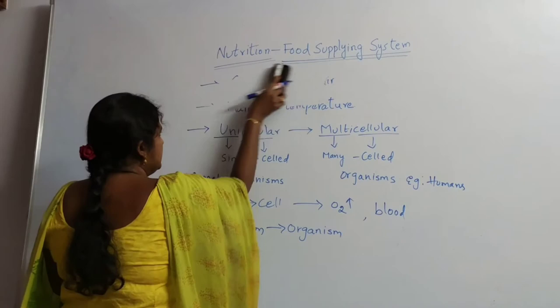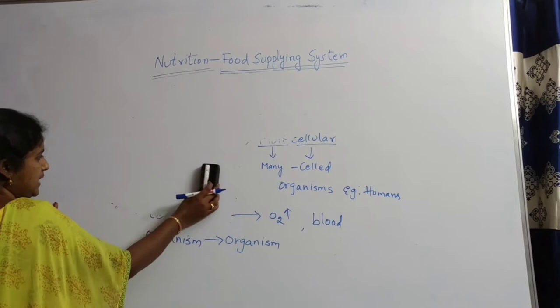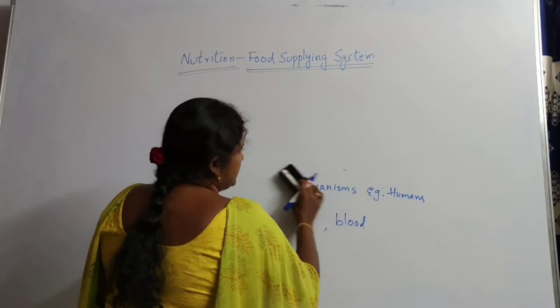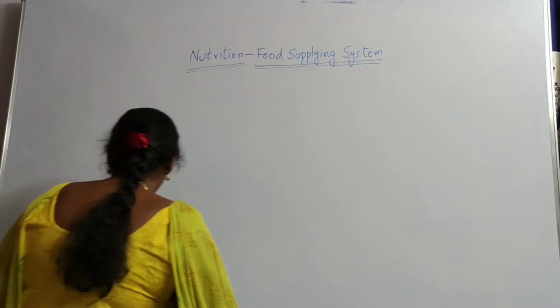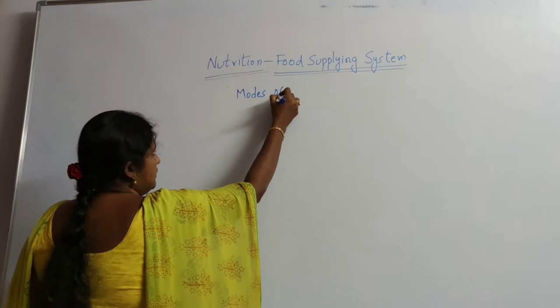Mode of nutrition is generally of two types. As we all know, what is the first one? The first one is autotrophic nutrition and the second one is heterotrophic nutrition. So coming to mode of nutrition, it is of two types. Let us see in a tabular form.